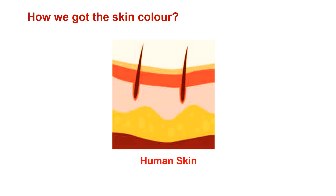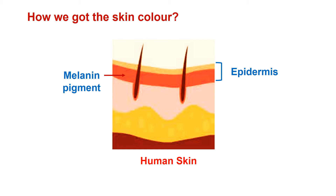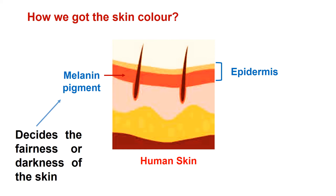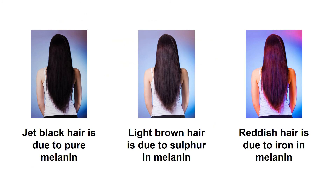Do you know how we get skin color? We get skin color due to melanin pigment, which is present in our body. Melanin is synthesized in certain glands in the skin — as we can see in the diagram, melanin is synthesized in the epidermis. The percentage of melanin decides the fairness or darkness of the skin, and the color also depends on the climate. Melanin protects our skin and inner parts from ultraviolet sun rays. Melanin also determines the color of our hair: jet black hair is due to pure melanin, brown or lighter hair is due to sulfur in the melanin, and reddish hair is due to iron in the melanin.